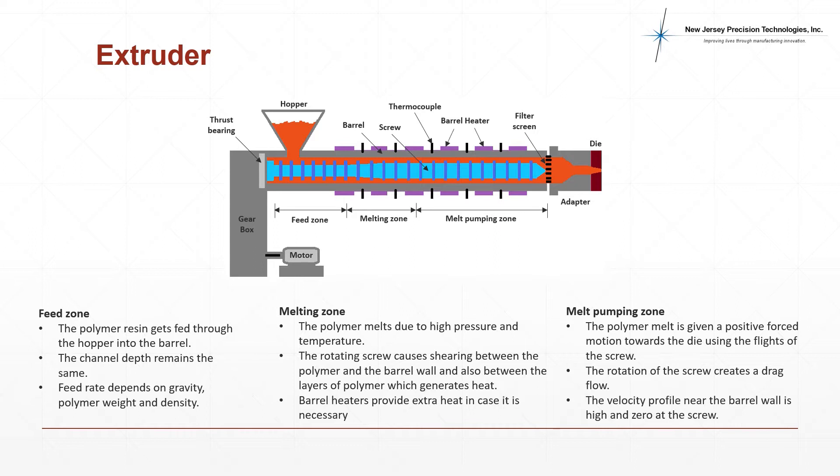The melting zone is where the polymer undergoes melting due to high pressure and temperature. The rotating screw shears the polymer against the barrel wall which causes heat generation. Additional barrel heaters provide extra heat necessary to melt the polymer if required.